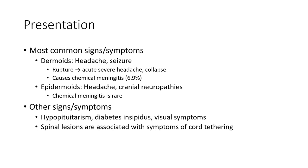Most common signs and symptoms: dermoid is usually very severe. If there is a rupture, it will cause acute severe headache and chemical meningitis in up to 6.9% of cases. Epidermoid also causes headache and cranial neuropathy. Chemical meningitis is rare.